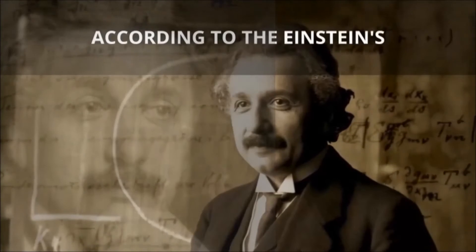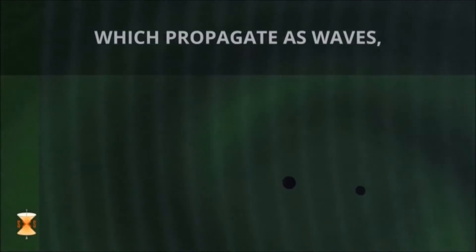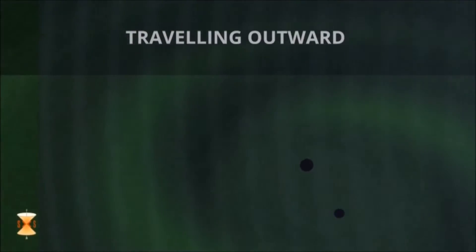According to Einstein's theory of general relativity, gravitational waves are ripples in the curvature of space-time which propagate as waves, traveling outward from the source.